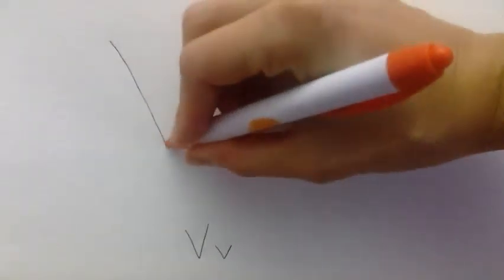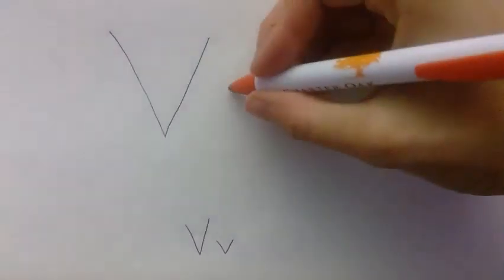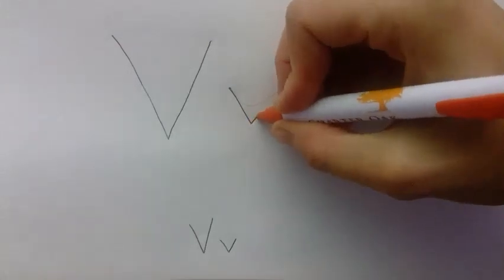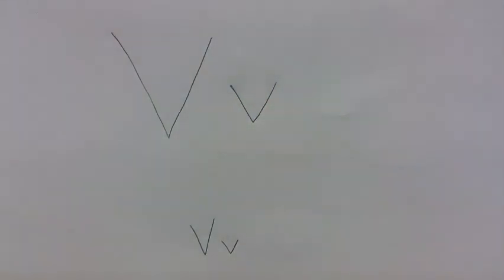Upside down, right? Let's start by writing the uppercase V. Start at the top of your page and draw a diagonal line down, and then draw a diagonal line up. Let's do the lowercase v — it's very similar. Start in the middle of your page, draw a diagonal line down that's small, and draw a diagonal line up. And that's how you draw your lowercase and uppercase v.